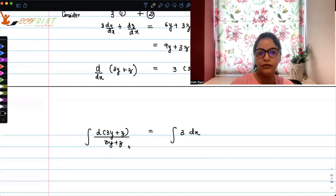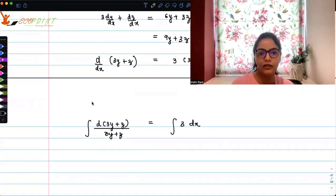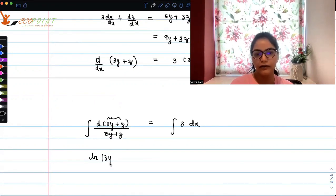So if you integrate on both sides after taking this to the denominator, d of 3y plus z, and what will happen is if you observe, this is like if you take 3y plus z as some other variable, so you have d of that variable upon that particular variable. So you can directly say that what you have here is log 3y plus z equals 3x plus say constant k.